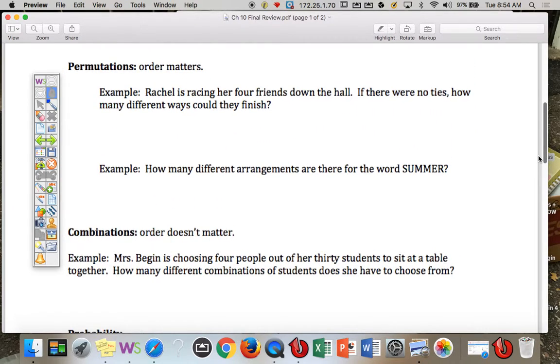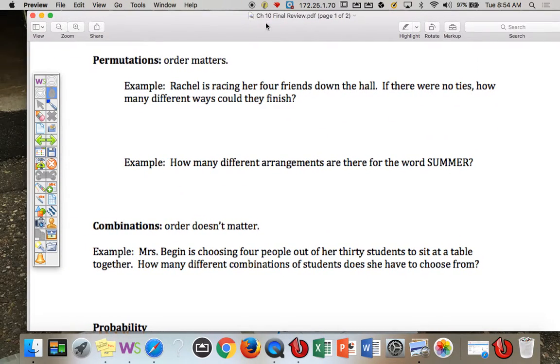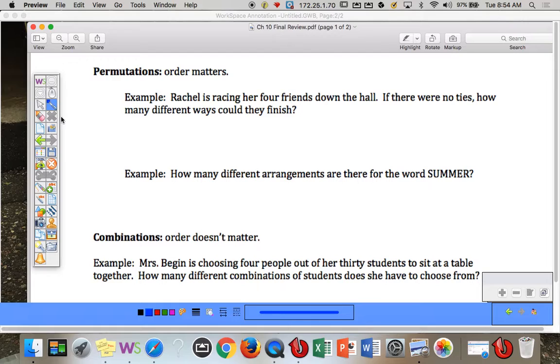We also looked at permutations where order matters. So here's an example. Rachel is racing her four friends down the hall. If there are no ties, how many different ways could they finish? So a few ways to do this. Rachel is racing her four friends down the hall. So there's five kids total.